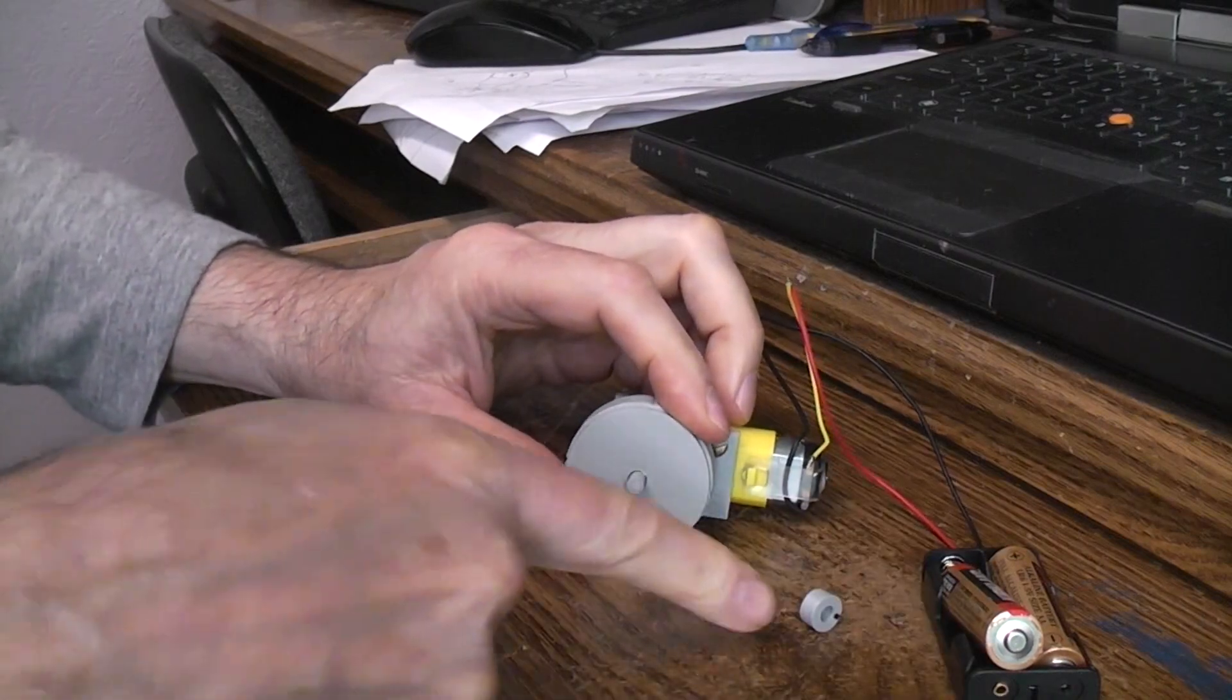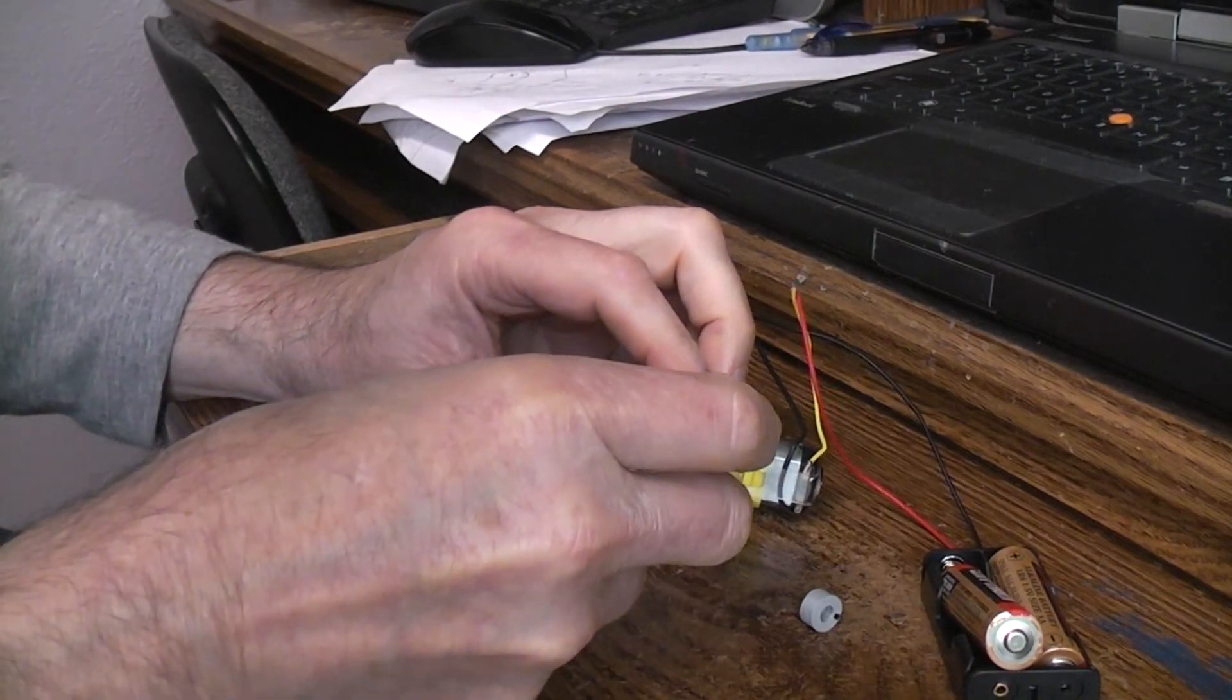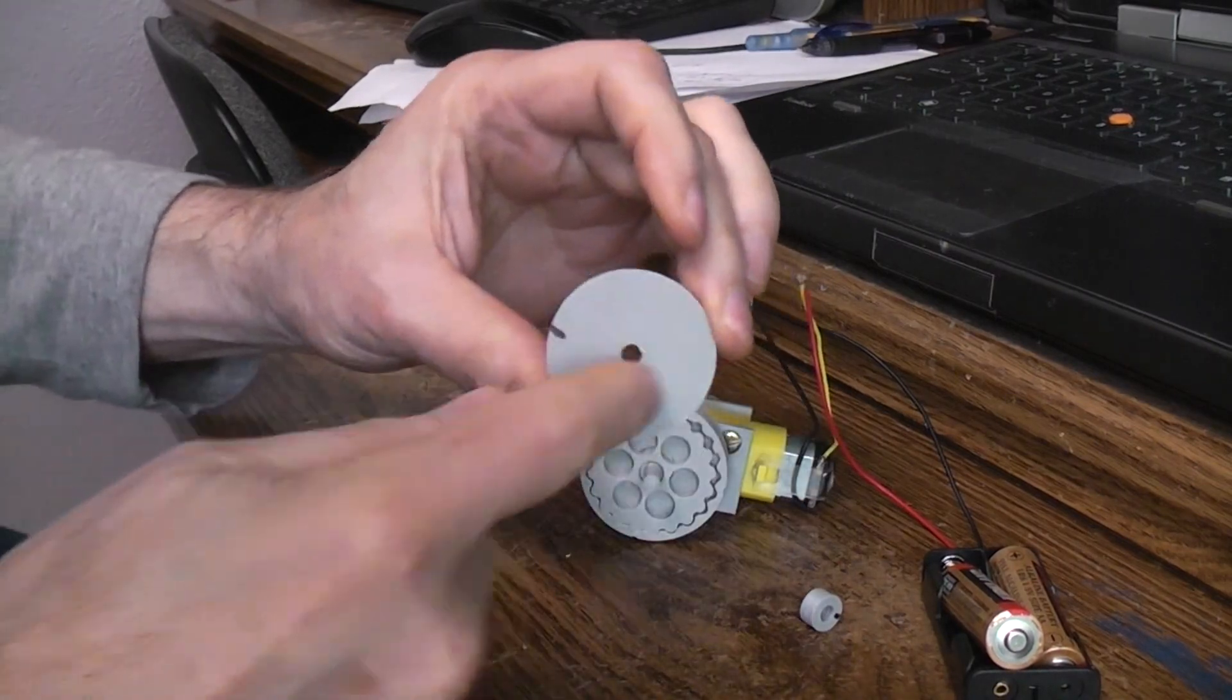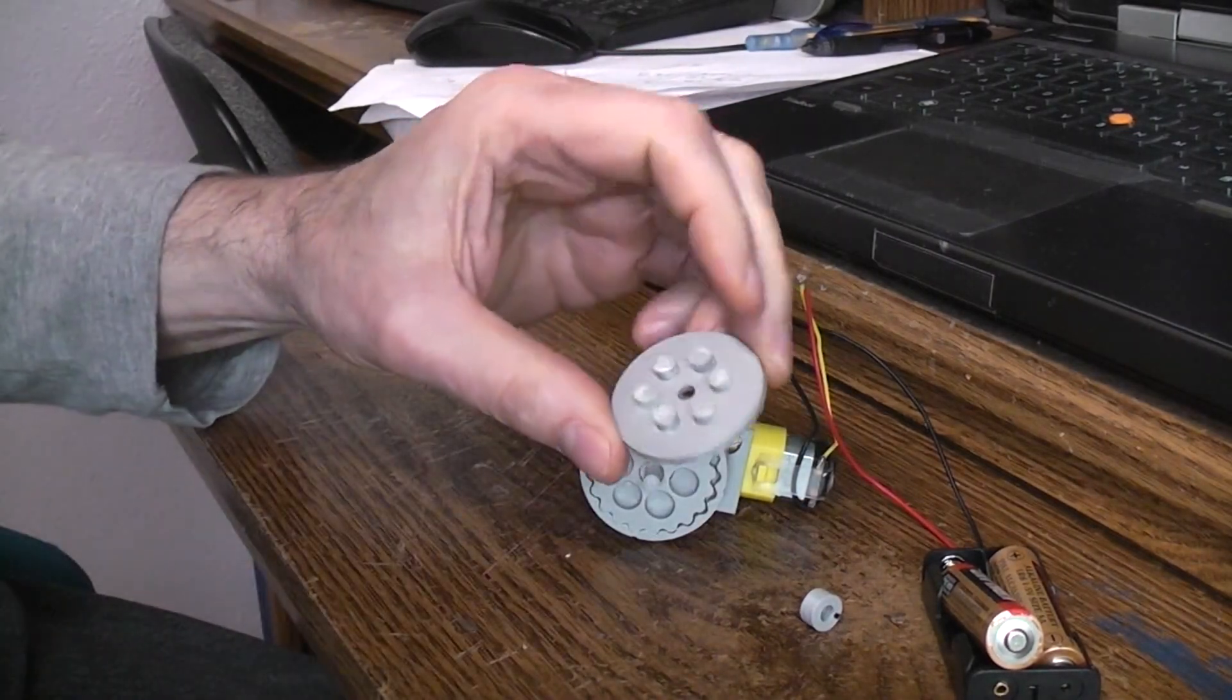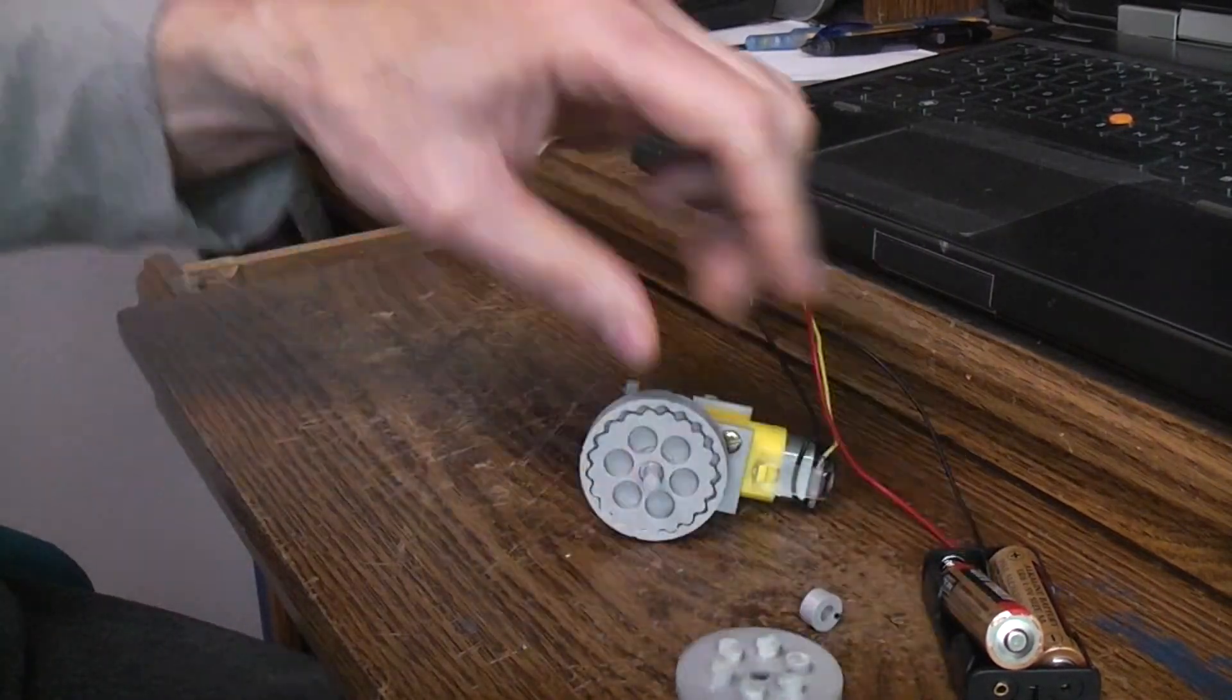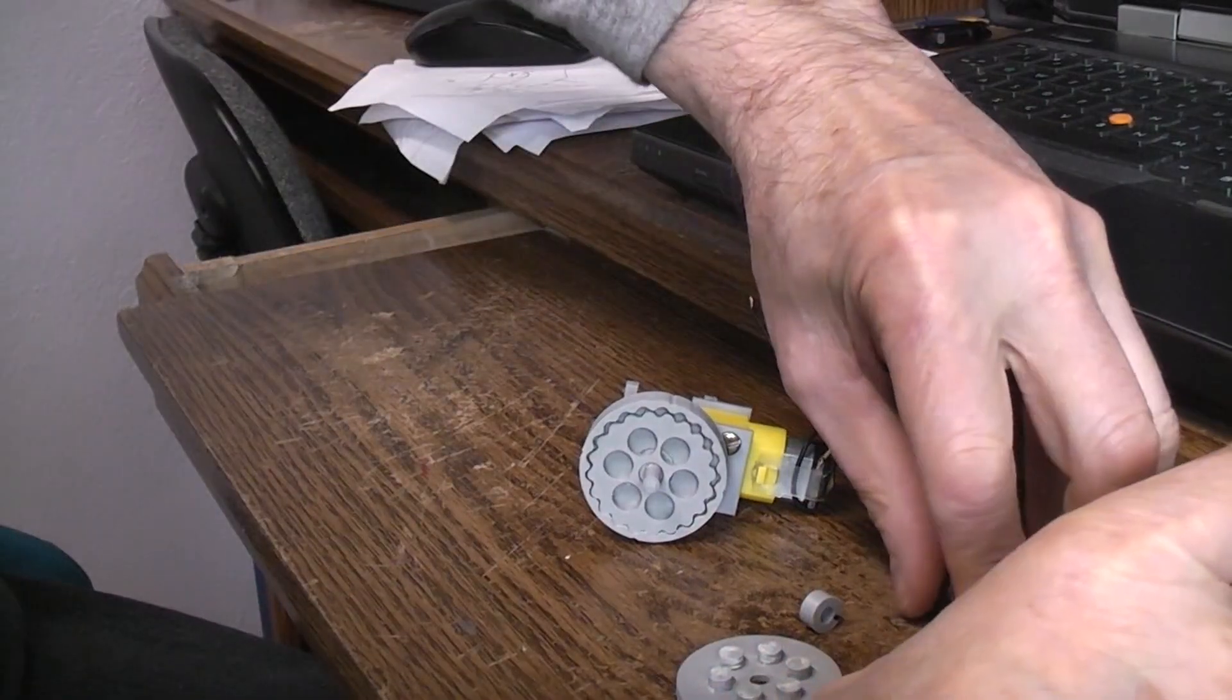I took that little lock hub off so I can then remove the output disk. This is the disk that you would connect whatever you wanted to drive to. These drive pins interface with the pins inside there.